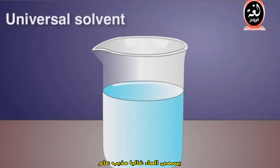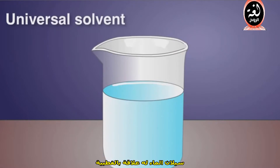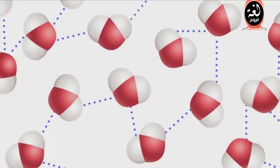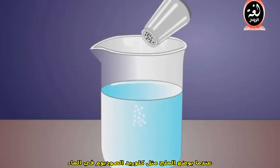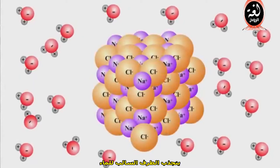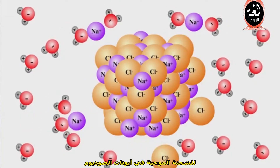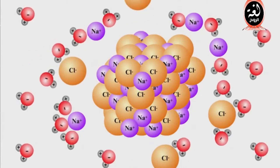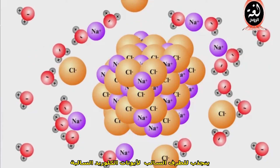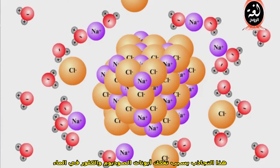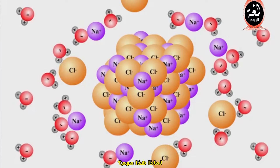Water is often called the universal solvent, which means that many substances dissolve in it. Water's solvency has to do with the polarity and hydrogen bonding ability of water molecules. When a salt, such as sodium chloride, is placed in water, the negative ends of the water molecules are attracted to the positively charged sodium ions, and the positive ends of the water molecules are attracted to the negatively charged chloride ions. This attraction causes the sodium and chloride ions to break up or dissociate in water.